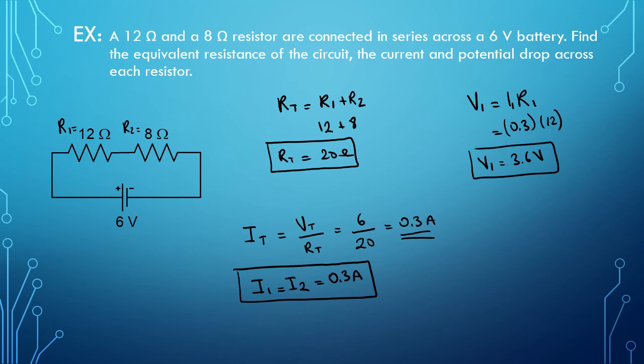Well, I can do the same thing for the resistance number 2. So the voltage 2 is equal to I2 times R2. And that's going to be 0.3 times 8. And V2 happens to be 2.4 volts.